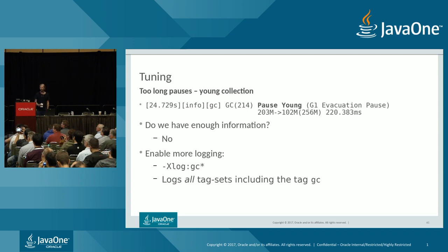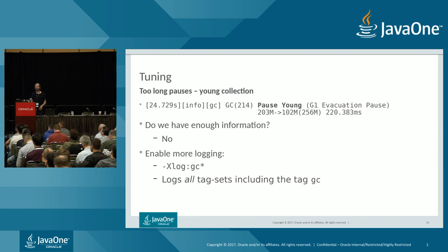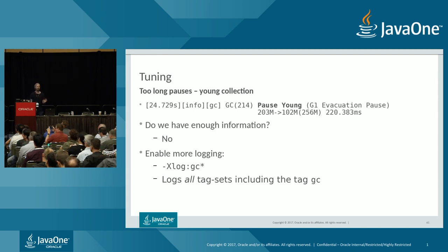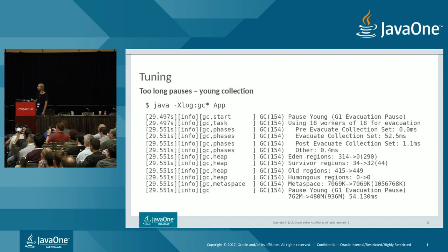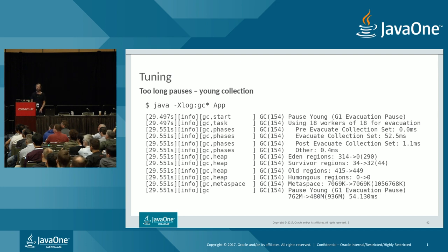Now we understand young collections better, but do we have enough data? No — we need to enable more logging. Using -Xlog:gc* means we want all tag sets including gc, so log lines with gc and potentially other tags. With gc* we get much more information, and the GC ID helps us identify which lines belong to which garbage collection.